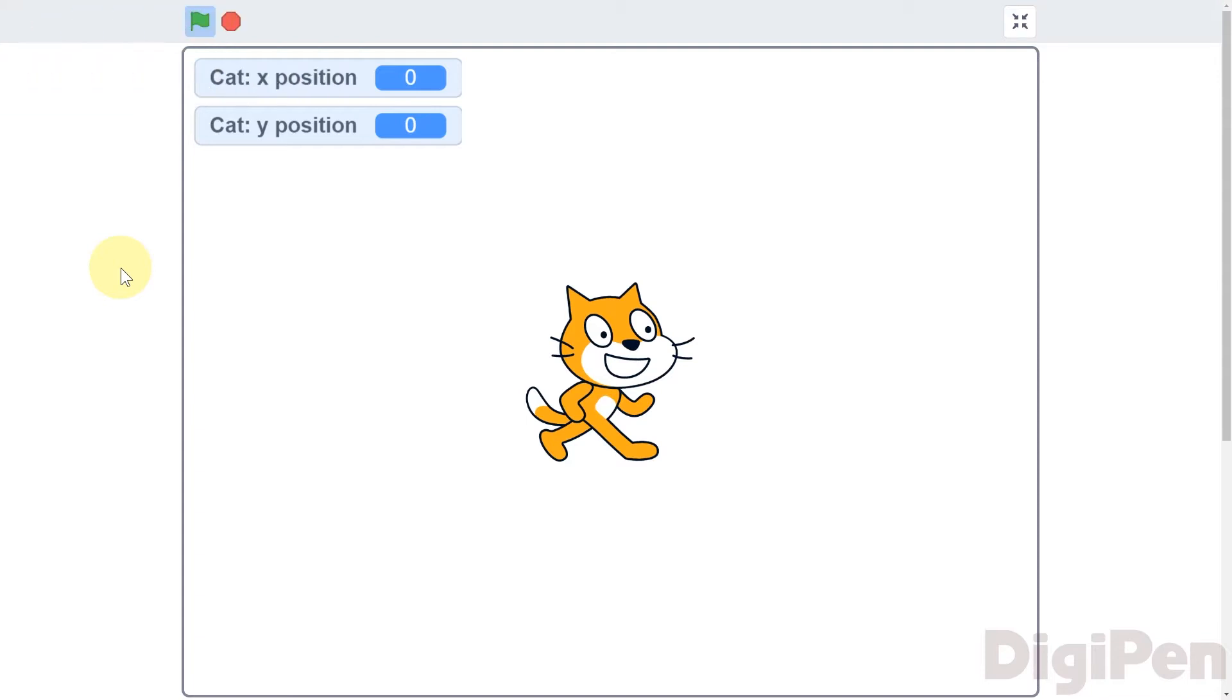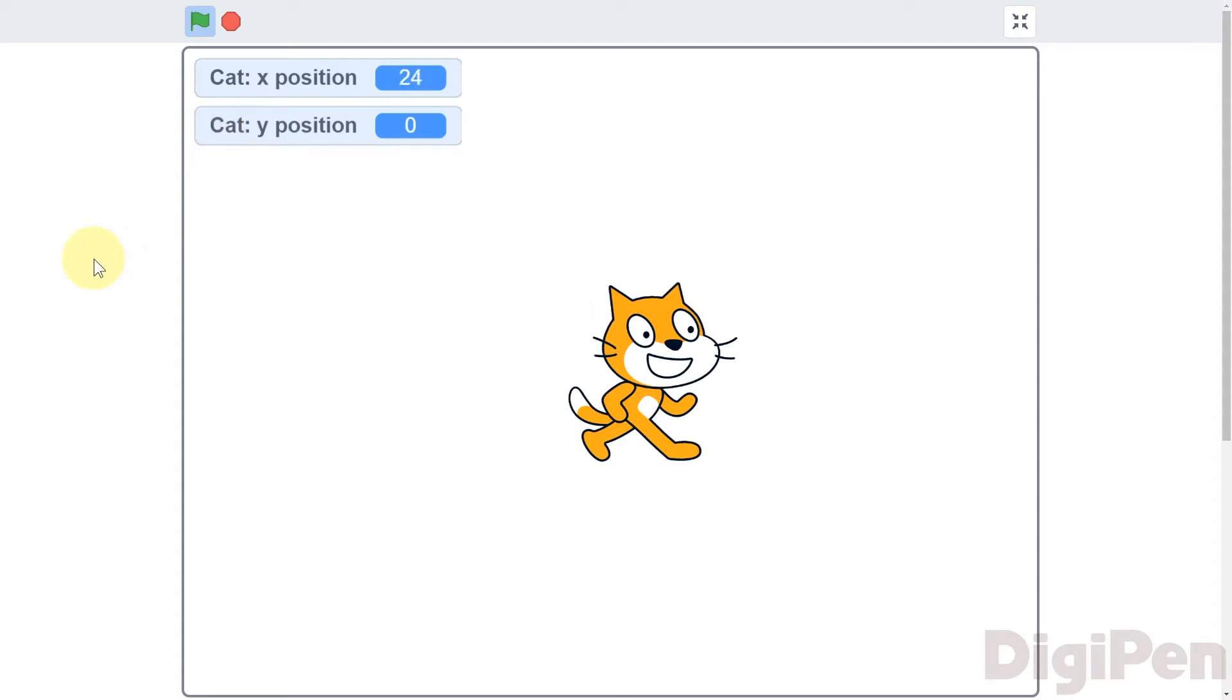In Scratch, every sprite has an x position for where it is in the game window from side to side, and a y position for where it is from top to bottom. As a sprite moves to the right, its x position increases, and as it moves to the left, it decreases. As it moves up the screen, its y position increases, and as it moves down, its y position decreases.